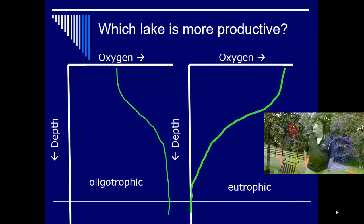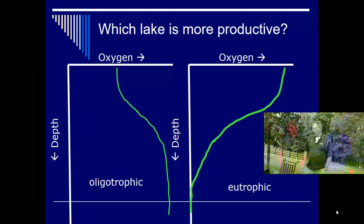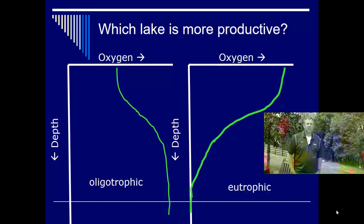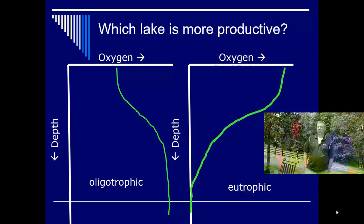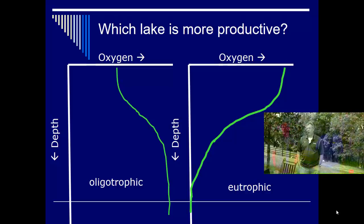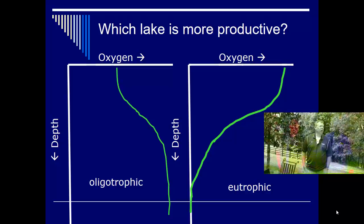A couple of terms you need to know: a low-productivity lake is called oligotrophic; a high-productivity lake is called eutrophic; somewhere in the middle, mesotrophic. Sometimes you see extremely productive lakes called hyper-eutrophic. I think Kentucky Lake is considered mesotrophic.